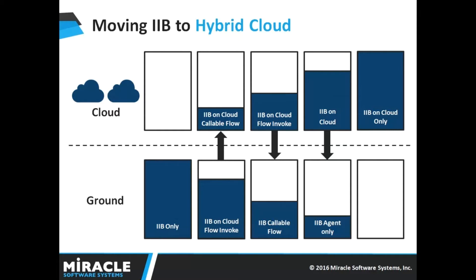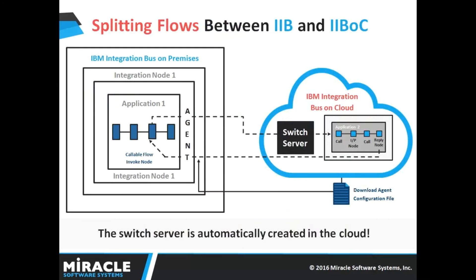The last scenario shows having integrations completely in the cloud. This diagram explains how integrations running on cloud can securely connect with integrations running on-premise using the Switch Server and connectivity agents. The Switch Server is used to route the data, and connectivity agents contain the certificates that your flow requires to communicate securely with the Switch Server.